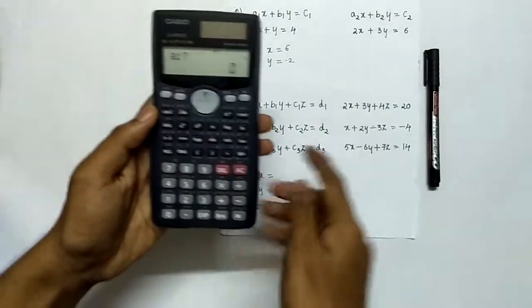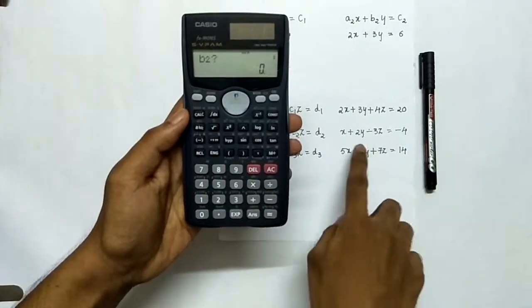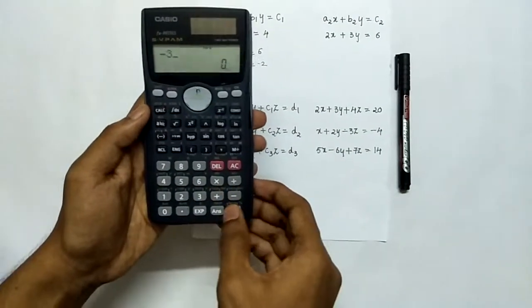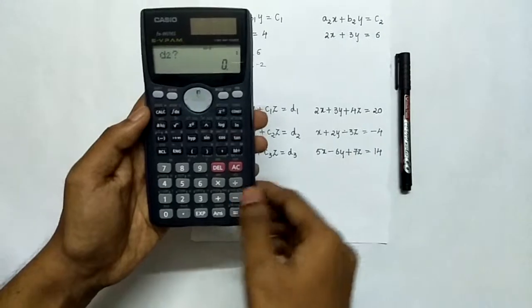a2 is 1, b2 is 2, c2 is minus 3, d2 is minus 4.